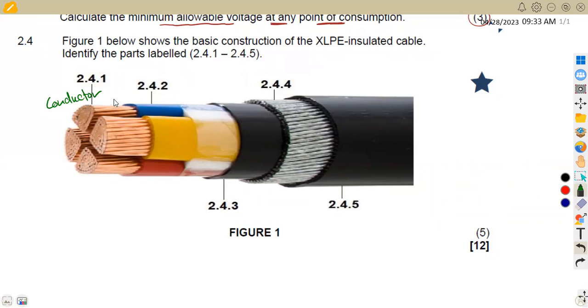So remember we've got a conductor in this case, then we've got the insulation of our XLPE on this one. So this is our XLPE insulation. That's our insulation in this case. We move on to 2.4.3. So this one is our inner sheath of the PVC. So this is our PVC inner sheath.